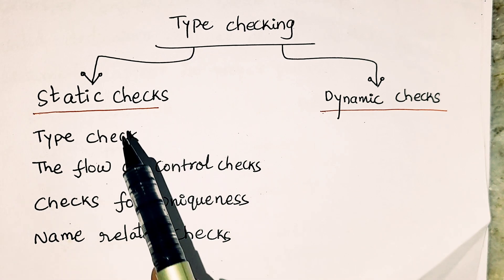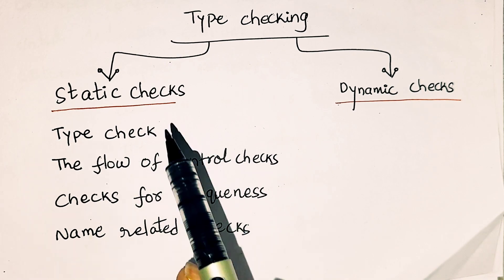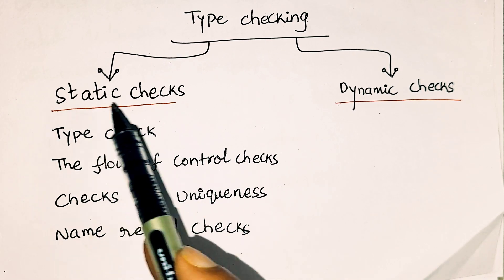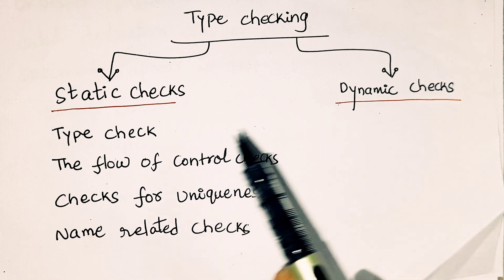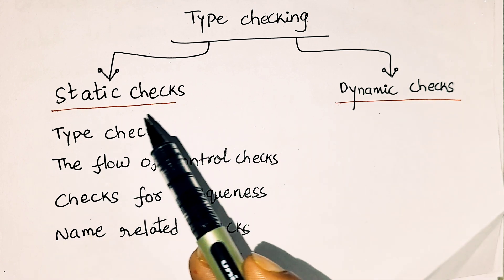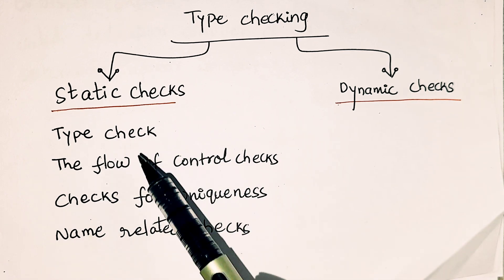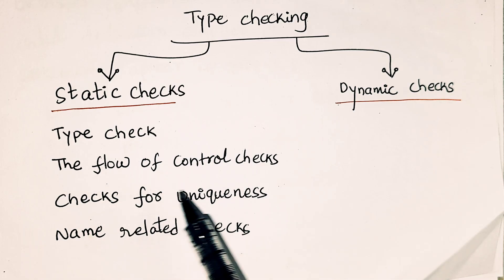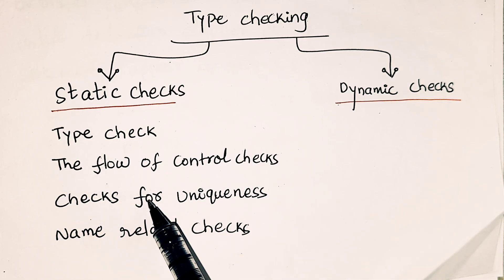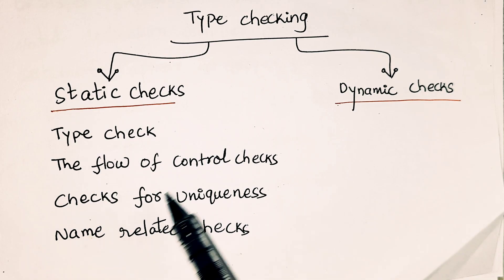There are two types of checking: static checks and dynamic checks. Under static checks, there are four subtypes: type checks, flow of control checks, checks for uniqueness, and name-related checks.